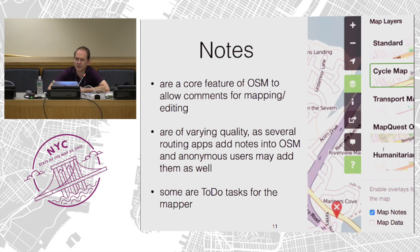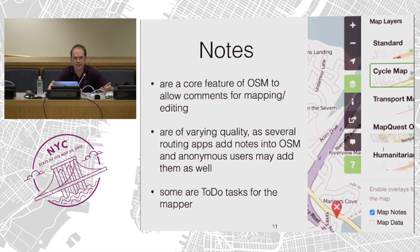Notes is a core feature of OpenStreetMap and it's a way for users to communicate problems with one another. They are of varying quality — some are fantastic, some are garbage. Some are garbage because they come from anonymous users or from automated mapping tools like a smartphone routing application. They'll say something like 'the speed is incorrect,' which is not actionable intelligence. Some are basically notes from the mapper to the mapper, like 'add some street lights here,' which isn't a very high quality note. On a graphic: red notes are open, green are resolved and disappear after about a week. Clicking on the note opens the comment.